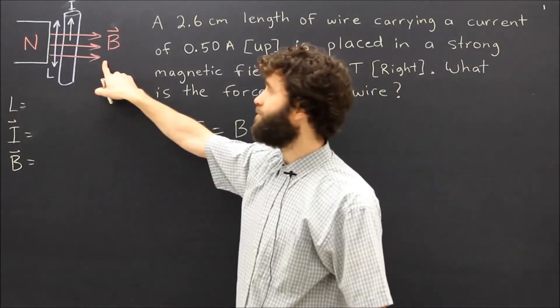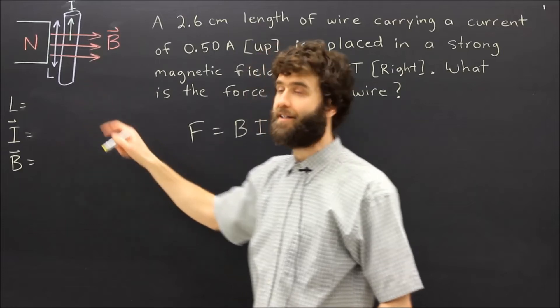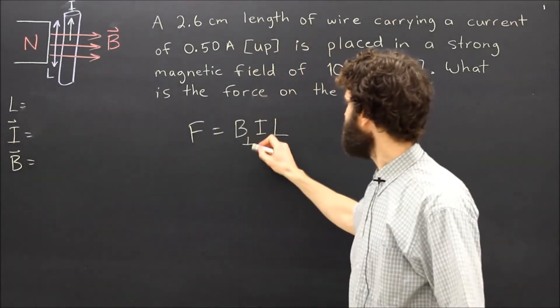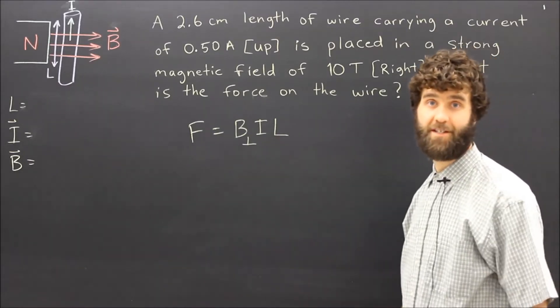Note that the magnetic field B is perpendicular to the direction of the current I. Sometimes we use a symbol like this to indicate that, and that's how this formula is intended to be used.